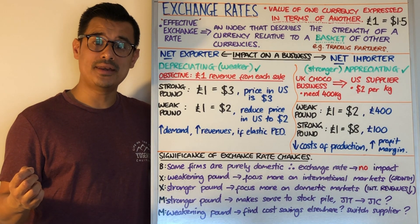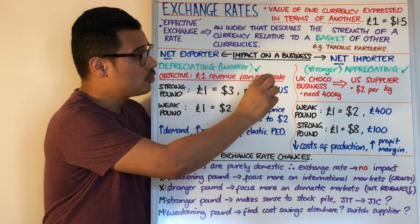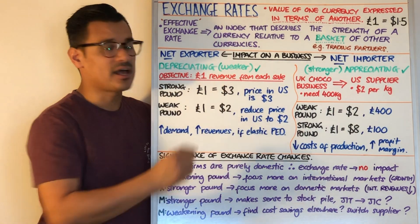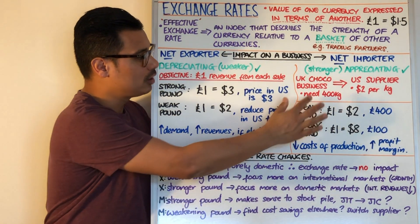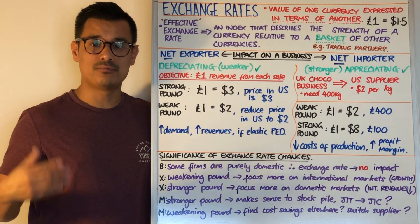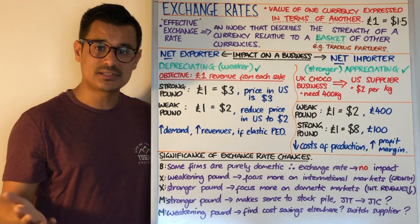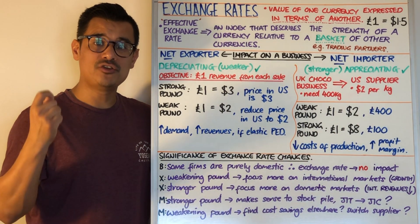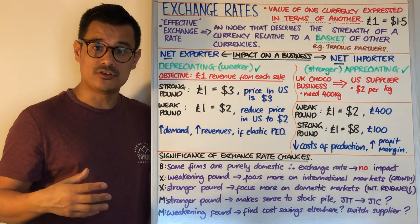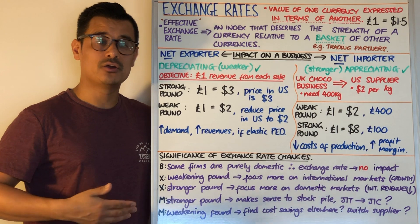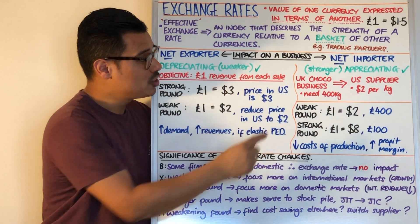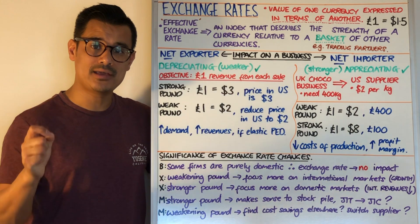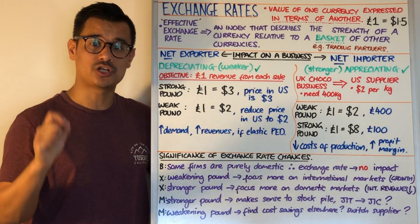Now let's look at the other side: if you are a net importer, you will want a stronger, appreciating pound if you're a UK business. For example, a UK chocolate business requires 400 kilograms of cocoa from their US supplier, who charges two dollars per kilogram. At two dollars per kilogram, 400 kilograms comes to 800 dollars — that's the price the US business charges.